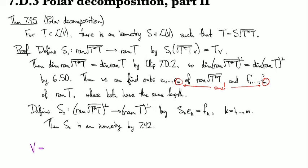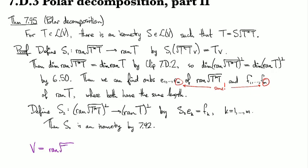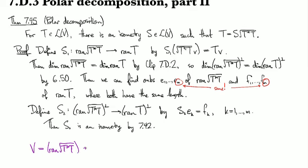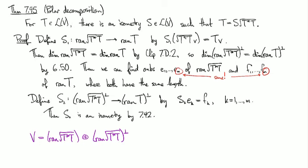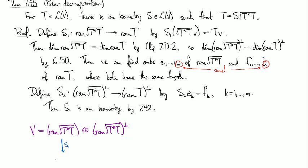Now, this is actually not part of the proof. So V is range of root T star T direct sum range of root T star T perp by our orthogonal decomposition theory.